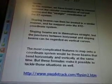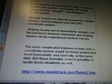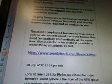Sloping beams are in themselves straight, but the junctures between horizontal and sloping beams can be regarded as vertical curves. The most complicated features to map onto a coordinate system would be those beams that bend horizontally and vertically at the same time. But these formulas make it possible to tackle this situation as well.